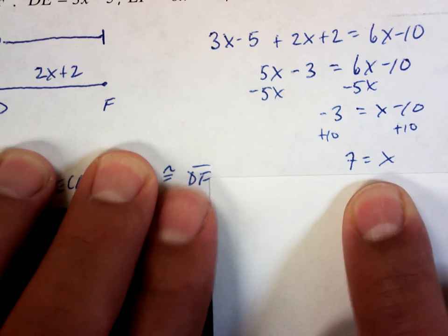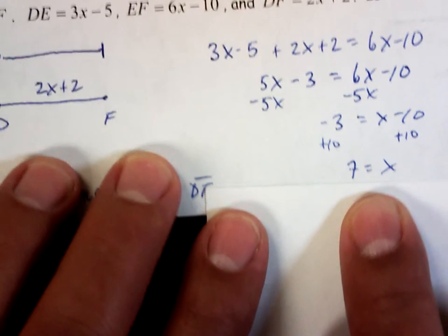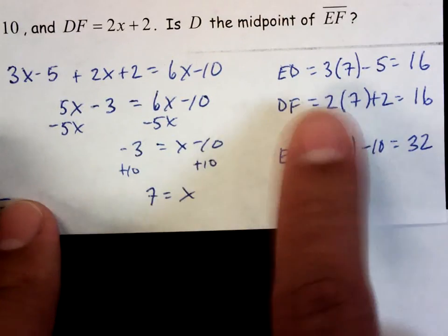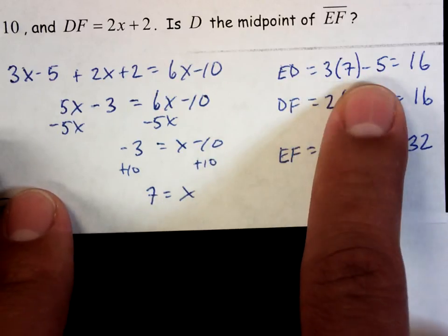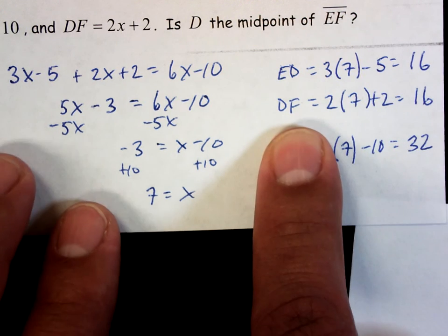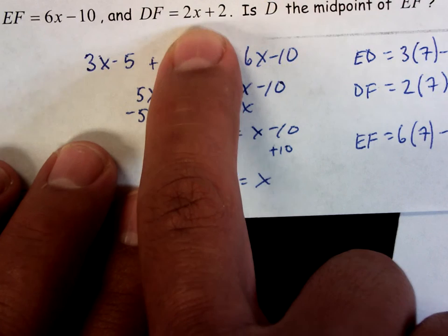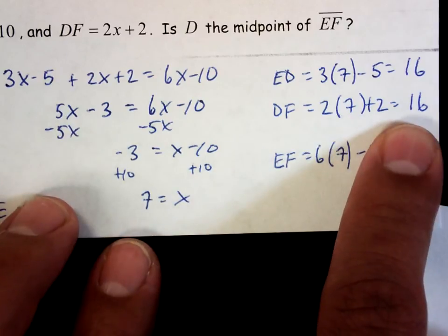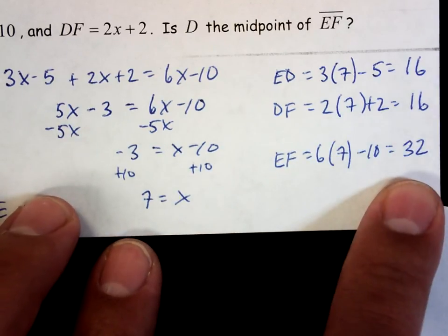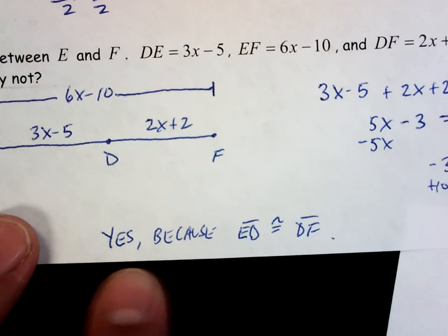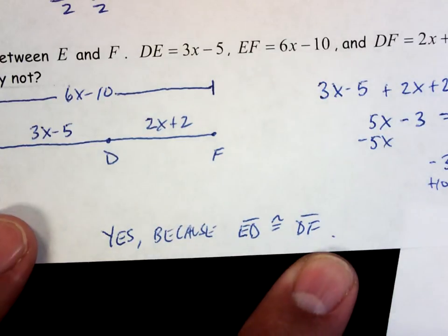So now I've got to figure out, okay, if x is 7, how long is ED? Well, it tells me up here, DE is 3x - 5. And if x is equal to 7, 3 times 7 minus 5 is equal to 16. So ED, or DE, doesn't matter, is equal to 16. How long is DF? It tells me DF is 2x + 2. And I know what x is now. It's 7. So I plug it in, I get 2 times 7 plus 2, it's equal to 16. And the whole thing, of course, is equal to 32. So I just showed that, yes, D is the midpoint. Why do I know that? Again, it asks me right here, why? Yes, because ED is congruent to DF. That's all you needed to say, but that question needed to be answered.